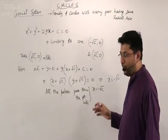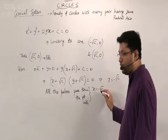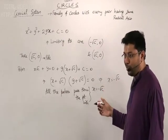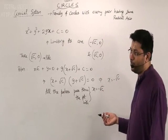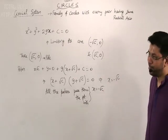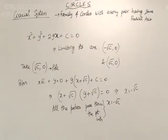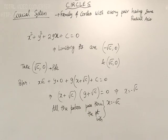This implies that the polar passes through (minus root c, 0), which passes through the other limiting point. Next property: every circle through the limiting points of a coaxial system is orthogonal to all circles of the system.